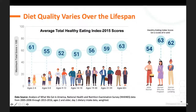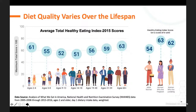The good news is that women who are pregnant or lactating actually see an improvement in their Healthy Eating Index score, showing they're receptive to trying to improve their diet. But the maximum score is 100, so we still have a ways to go.